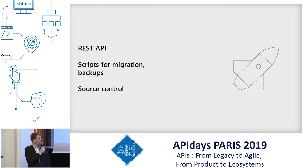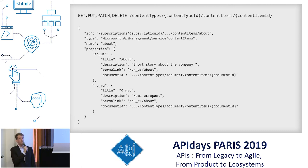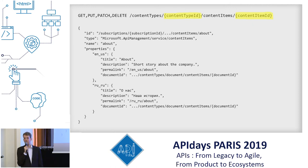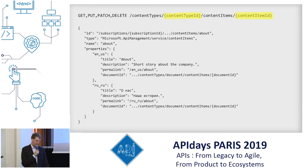Here is an example of the REST API. This particular endpoint has several HTTP verbs — GET, PUT, PATCH, DELETE. It takes the content type ID, which in this case is 'page', and the content item ID, which is the ID of the page. This is trimmed and shortened for the presentation. This is a page localized into two languages — American English and Russian — and the full document is, of course, much larger.